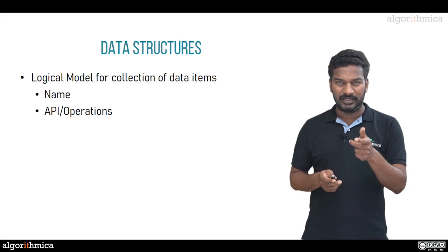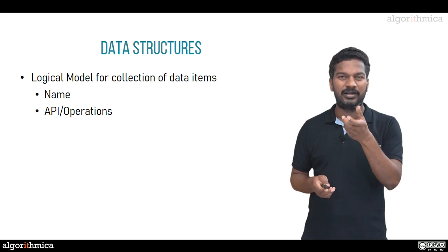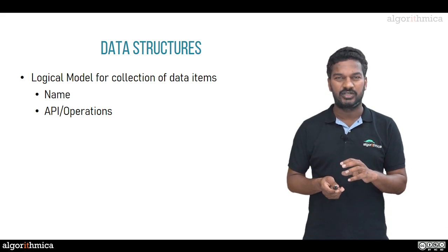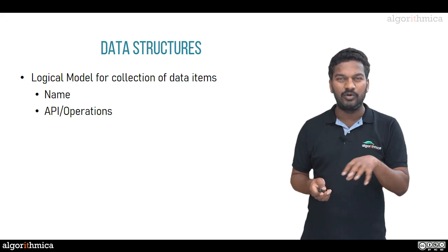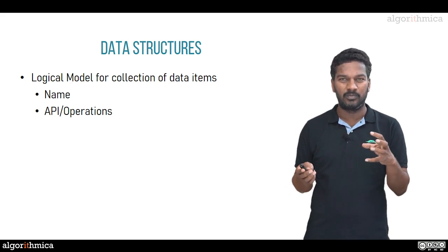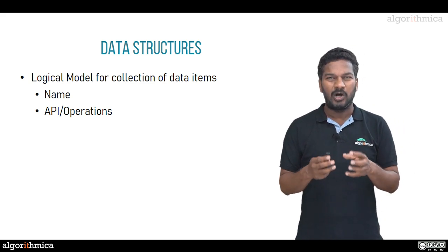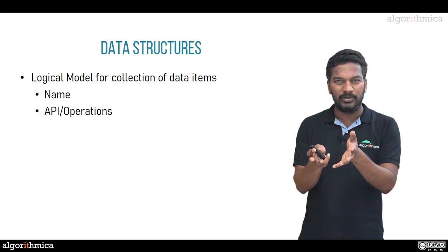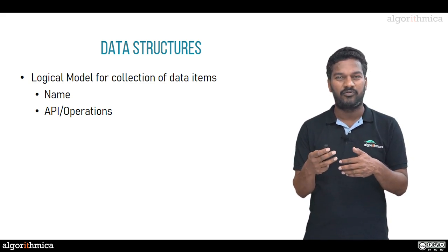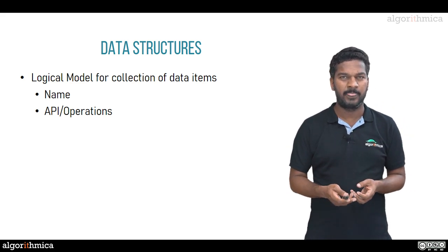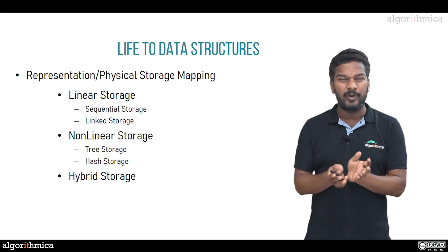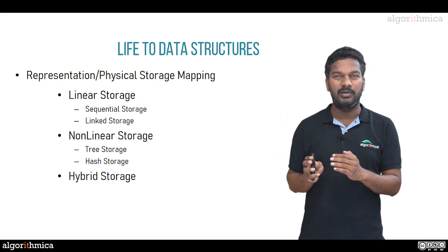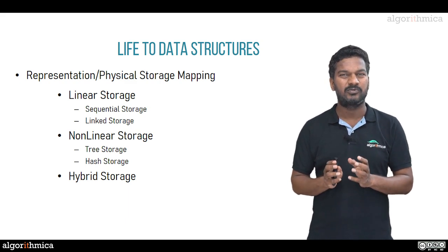Why are so many names given? Because each data structure tries to map a different kind of collection and each collection has different kinds of operations. So a data structure as a logical model has two things: the name given to the collection and the operations you perform on it. However, this logical naming and operations alone cannot give the data structure a physical existence in computer memory. To give a data structure life in computer programming, you need storage mapping — how you bring this logical model into actual computer memory.